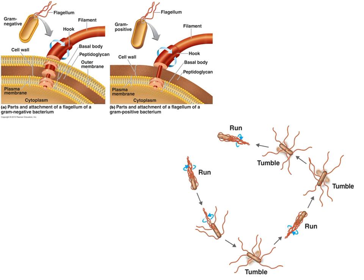Since we have the basal body and the hook stuck in that shape, the flagella isn't going to whip back and forth the way you might imagine. You would never see a dog with a tail that came straight down and then tried to wag — it doesn't make sense. So obviously that's not how this flagella is going to move. The flagella of a prokaryotic cell actually works like a helicopter propeller.